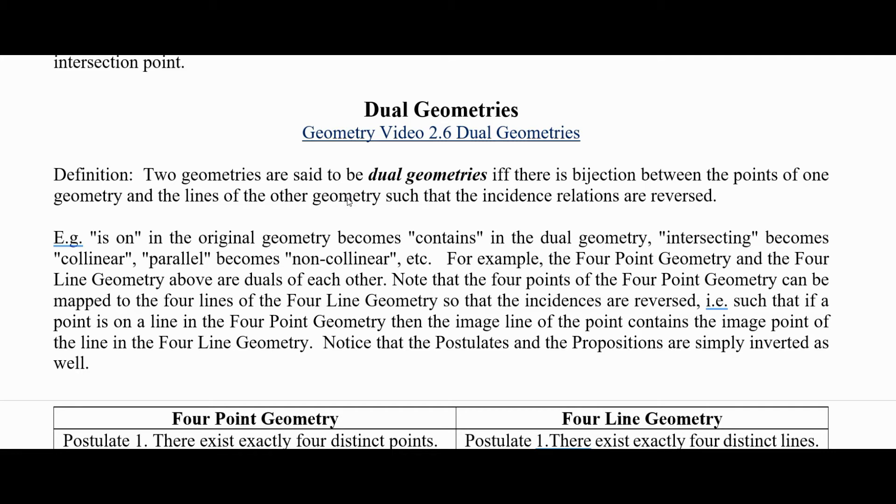For example, the four-point geometry and the four-line geometry that we had in the last two videos are actually duals of each other. So note that the four points of the four-point geometry can be mapped to the four lines of the four-line geometry so that the indices are reversed.